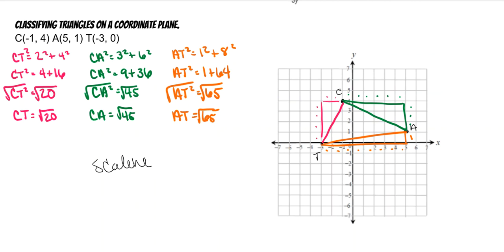So that's how you would classify by sides. You would find the distance of all of them. I chose to do Pythagorean theorem. You could have just done the distance formula if you wanted to. It's whichever one is easier for you. And that's the end of our notes.